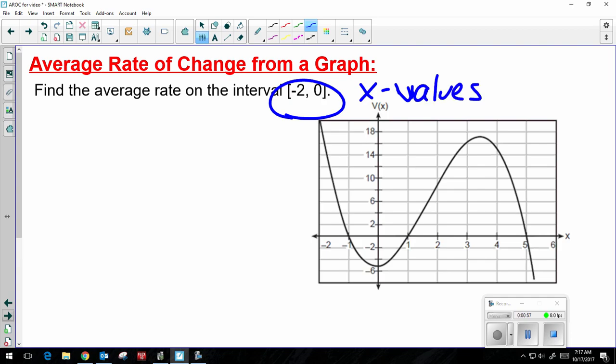So, negative 2, here's my point. I have the point negative 2 comma 20, and then 0, here's my point. I have the point 0 comma negative 5.